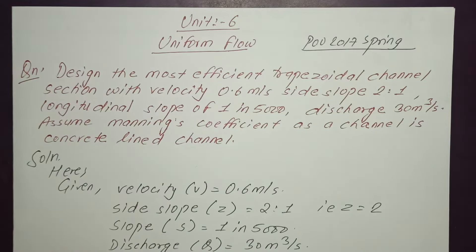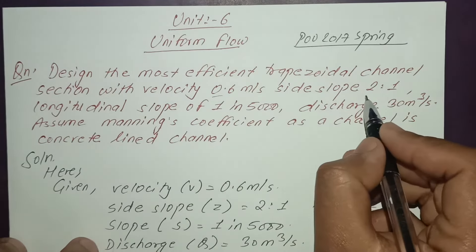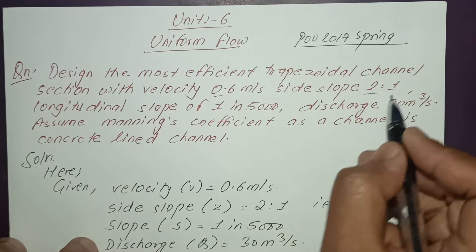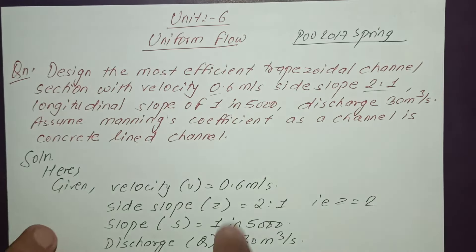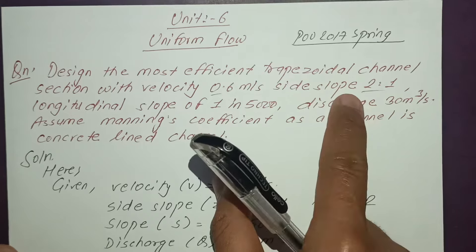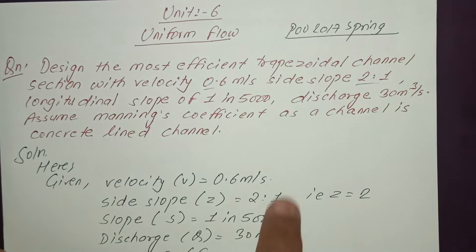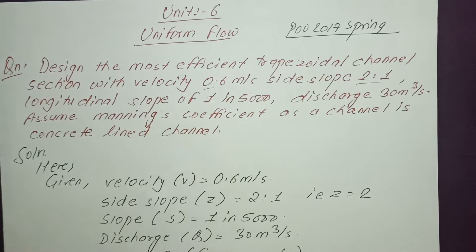We are going to solve: Design the most efficient trapezoidal channel. Given: velocity = 0.6, side slope = 2 is to 1, longitudinal slope (bed slope) = 1 in 5000, and discharge is given. Assume Manning's coefficient.